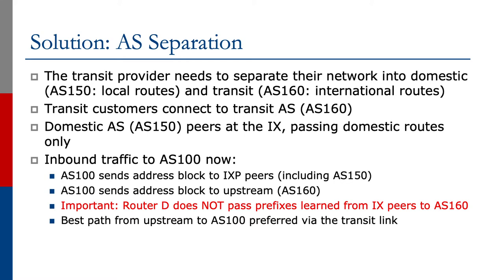So let's look at how this is set up. Inbound traffic to AS100 now follows this: AS100 sends its address block to IXP peers, including AS150, which is their upstream provider's domestic network. AS100 also sends the address block to its upstream, AS160. Router D in AS150 does not pass prefixes learned from exchange point peers to AS160 — that's the important rule. Now the best path from the upstream to AS100 will be preferred via the transit link. The domestic AS will use the IX, and the transit AS will use the direct transit link to AS100.